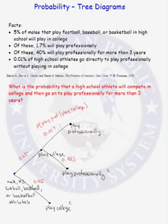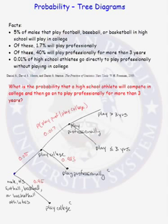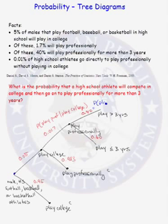Where does the tree go from here? If they played professionally, they may play for more than 3 years, or they play professionally for less than or equal to 3 years. 40% will play professionally for more than 3 years, given that they play professionally — so this conditional probability is 0.40, and this must be 1 minus 0.40, or 0.60. That 40% represents the probability that they play for more than 3 years, given that they played in college and they play professionally.